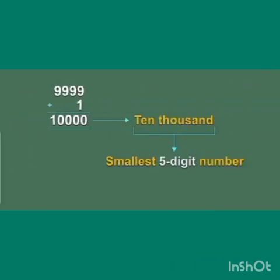So, 9,999 plus 1 is equal to 10,000, and it is also smallest 5-digit number.